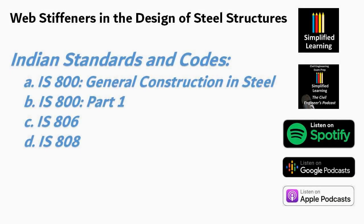Now let's talk about Indian standards and codes. In India, the design and construction of steel structures are governed by various standards and codes issued by the Bureau of Indian Standards, i.e. BIS. For web stiffeners, the following codes are relevant. IS-800 General Construction in Steel Code of Practice provides guidelines for general design, construction and use of structural steel in buildings and other structures, and outlines the requirements for web stiffeners in different types of steel members. IS-800 Part 1 Design Criteria focuses on the general design criteria for structural steel elements and includes provisions for web stiffeners to ensure adequate shear resistance in steel beams and girders.